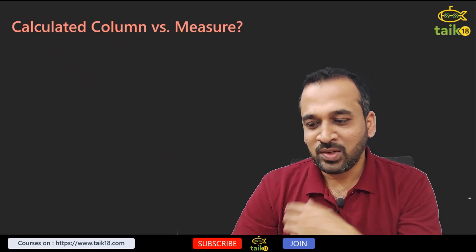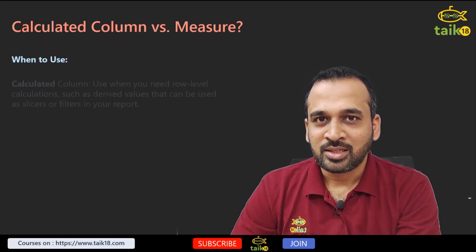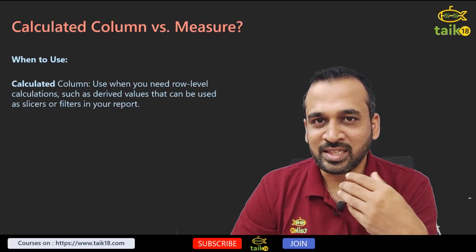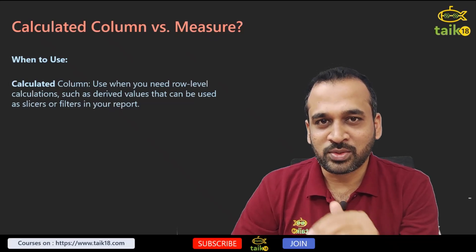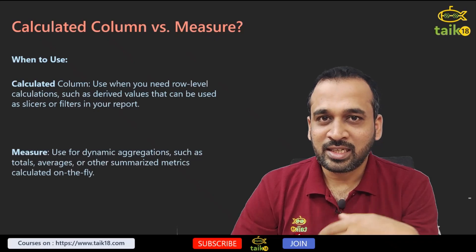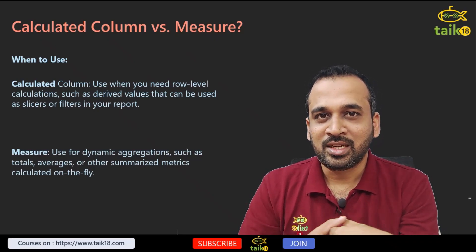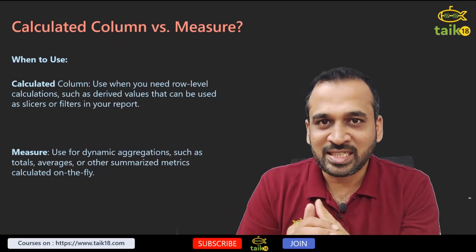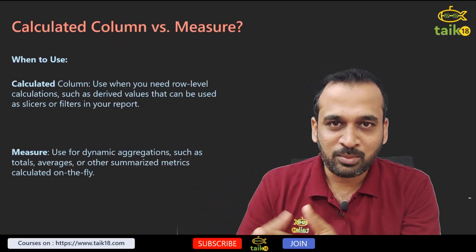Back to basics: what is calculated columns versus measures? Calculated columns are created within our data model so that they can calculate at a row-by-row level. Measures, on the other hand, are helpful in scenarios where we want dynamic calculations and they are visible only when you are using them in a visual, whereas the calculated column is visible on the data model itself.